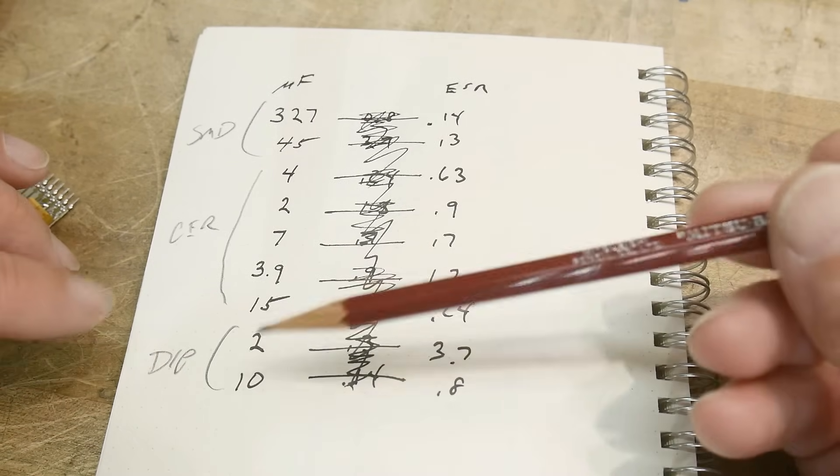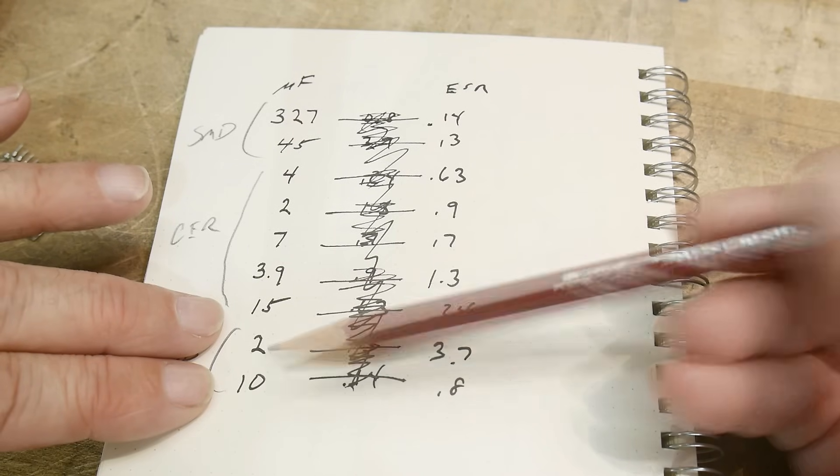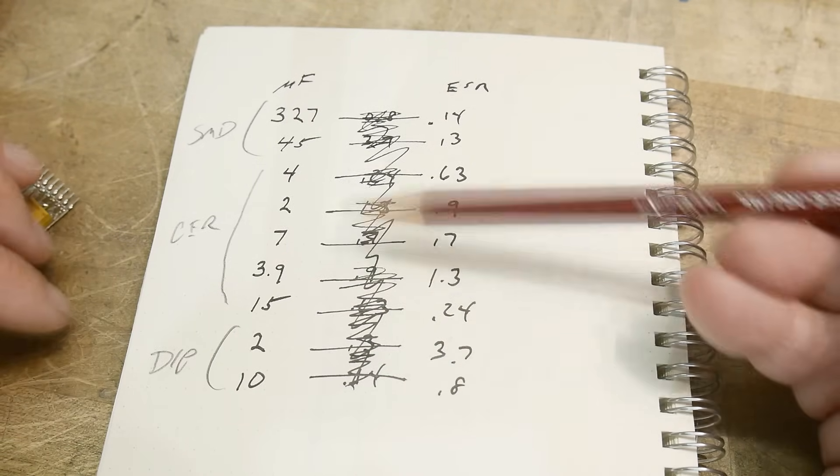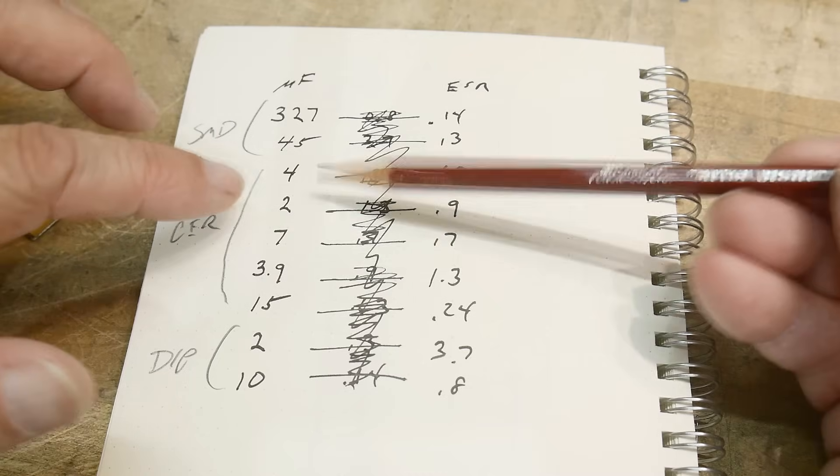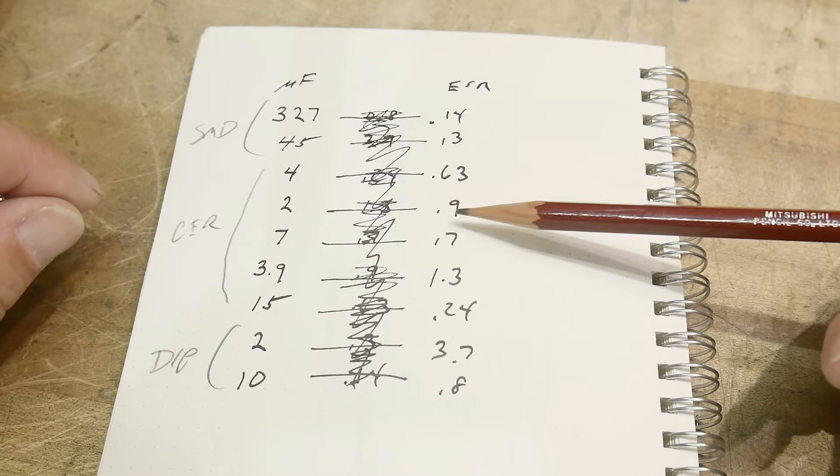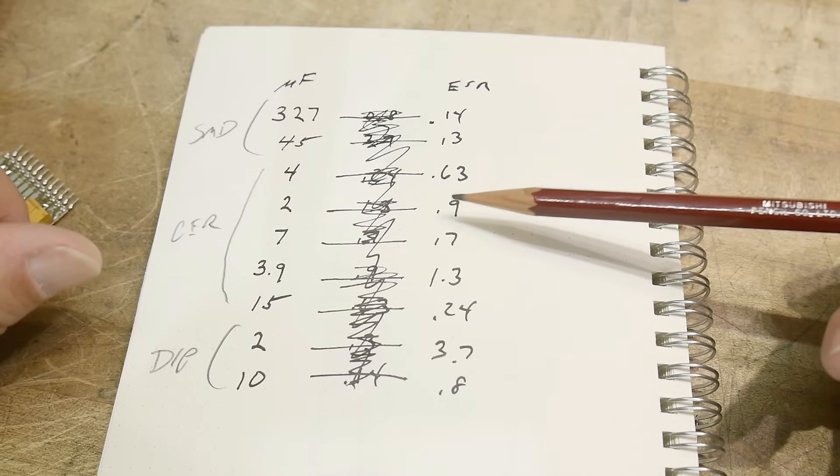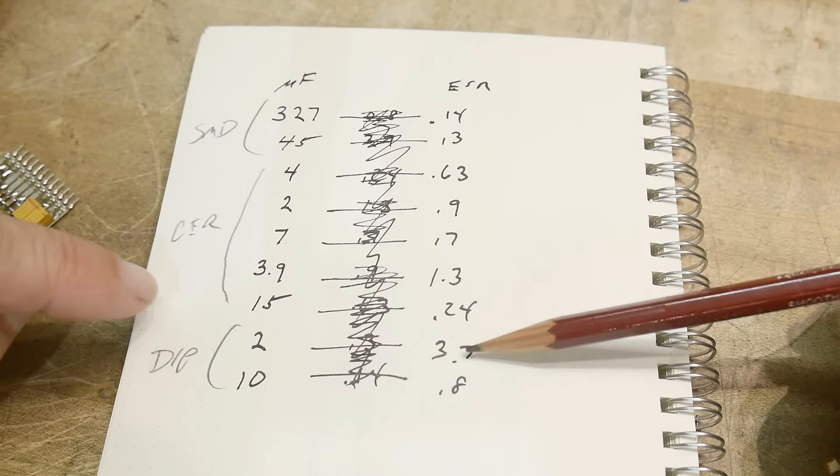All right, so 2 microfarad gave us 3.7. Now if we take a look at the ceramics, here's a 2 microfarad ceramic. It only gave us 0.9 ohms. So it's much, much better than the tantalum.